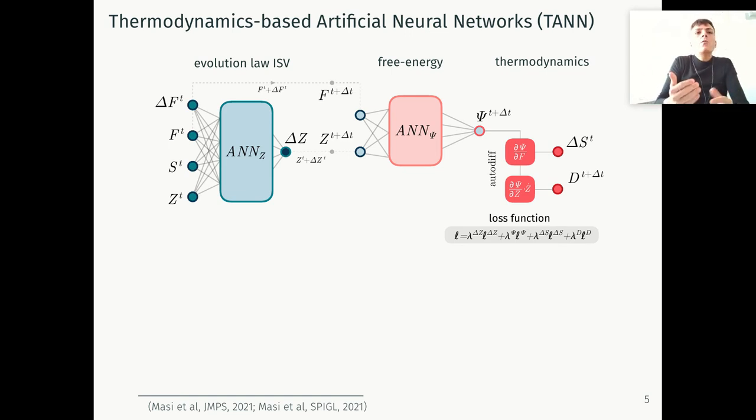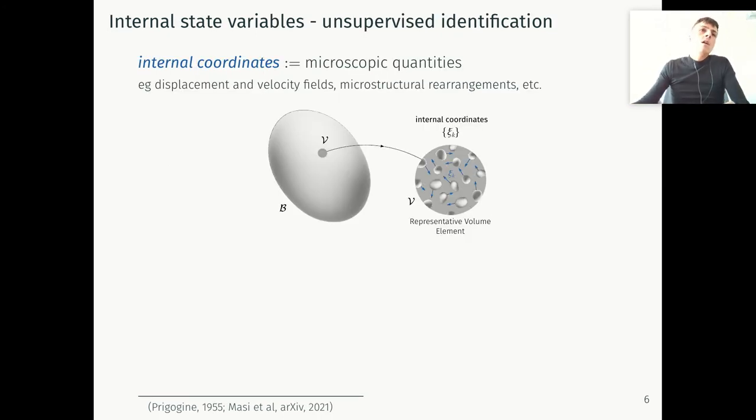Nevertheless, we'd like to ask ourselves if it's possible to identify these internal variables in an automatic manner. This is possible by introducing another quantity that I define here as internal coordinates. Internal coordinates are nothing else than microscopic quantities that identify the material state - they're like internal state variables, but rather than lying at the macroscale level, they're lying at the microscale level. Examples of internal coordinates may be displacement, velocity field, momentum of our microstructure, and any other microstructural rearrangement.